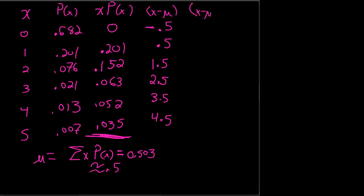And then the next thing I want to do is I want to square this. A negative squared is positive, and I get 0.25, 0.25, 2.25, 6.25, 12.25, and 20.25. And now I need to take this column, the x minus mu squared, and I need to multiply it by the probability of x.